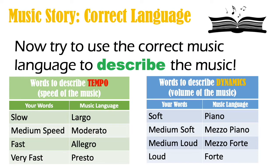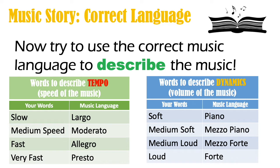Now that you've had a chat and described the music in your own words, let's have a look at some correct music terminology we should be using. There are two tables: a green table describing the correct music terminology for tempo — tempo means speed — and a blue table describing the correct music terminology for volume in music, or dynamics as we call it. Pause the video and use the correct music terminology to describe the tempo and dynamics of the piece.